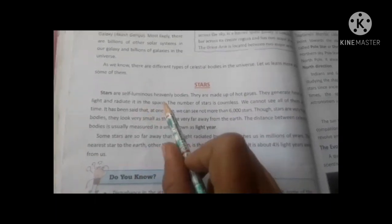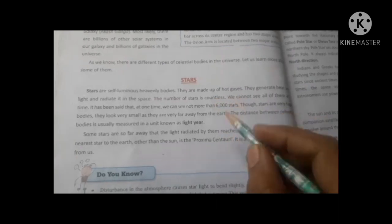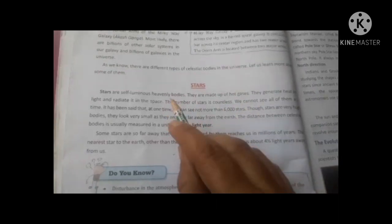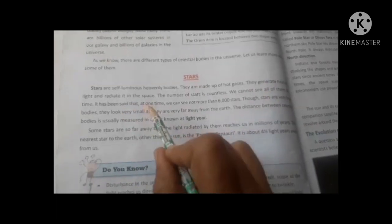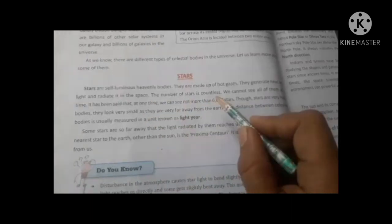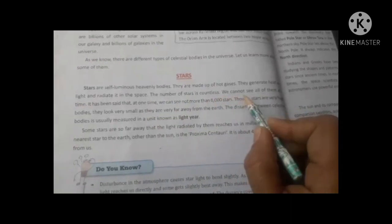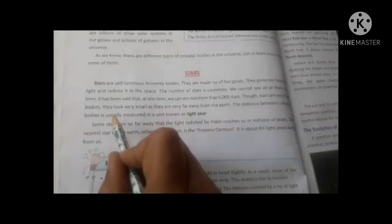Stars are self-illuminous heavenly bodies. They are made of hot gases. These gases make their light. They generate heat and light and radiate into space. There are countless stars in the universe. We can't even count how many stars there are.